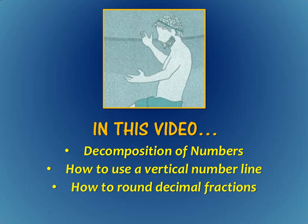To review, in this video we learned about decomposition of numbers and understanding that we aren't moving a decimal — we are merely moving the place value that we are focusing on. We also used a vertical number line to round our number, using maximum, minimum, and halfway values to understand where our number rounds to. Finally, we rounded decimal fractions, taking a number with whole numbers and decimal fractions and rounding it to a variety of place values depending on what the task asked. I hope this has helped you with using a vertical number line to round — happy rounding, see you next time!